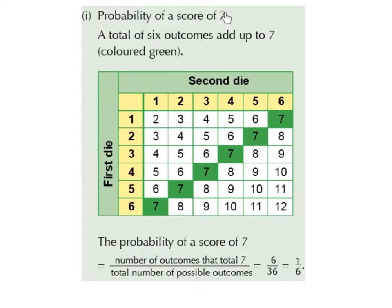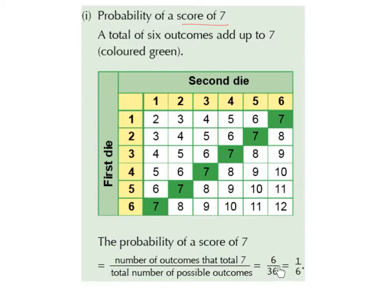So the probability of a score of 7. A total of 6 outcomes add up to 7, and they're coloured in green: 1, 2, 3, 4, 5, 6. So the probability of a score of 7 is the number of outcomes that total 7, which is 6, divided by the total number of possible outcomes, which is 36. And 6 over 36 is a sixth, so the probability of getting a result of 7 is 1 over 6.